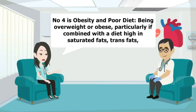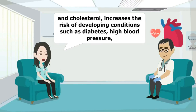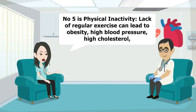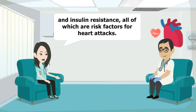Number four is obesity and poor diet. Being overweight or obese, particularly if combined with a diet high in saturated fats, trans fats, and cholesterol, increases the risk of developing conditions such as diabetes, high blood pressure, and high cholesterol, all of which contribute to heart disease and heart attacks. Number five is physical inactivity. Lack of regular exercise can lead to obesity, high blood pressure, high cholesterol, and insulin resistance, all of which are risk factors for heart attacks.